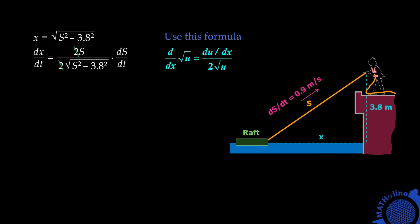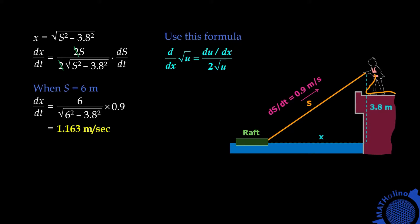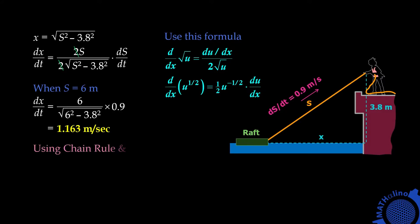Let us say we are interested in how fast the raft is moving when there is 6 meters of rope out. We can find dx over dt by plugging S equals 6 into our equation, and note that ds over dt is given as 0.9. That gives us our answer. Our solution is very straightforward because we have the formula for the derivative of the square root of u — this formula is actually a variation of the power formula with n equal to 1/2. The purpose of this video, however, is to do our calculation using the chain rule.